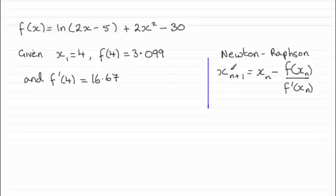So to get x₂ all we do is set n here equal to 1. So x₂ is going to equal x₁, the first approximation, minus f of 4, all divided by f dash of 4.